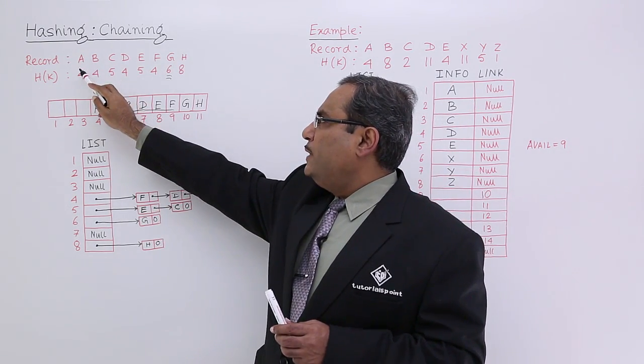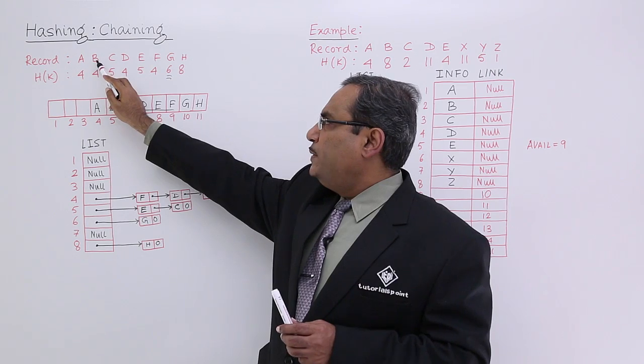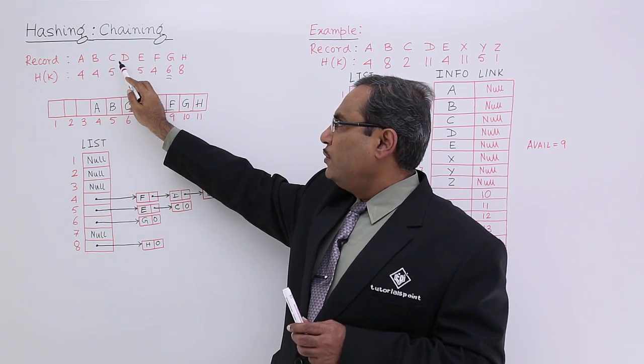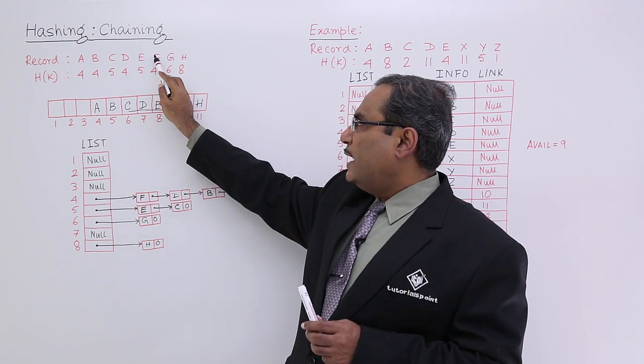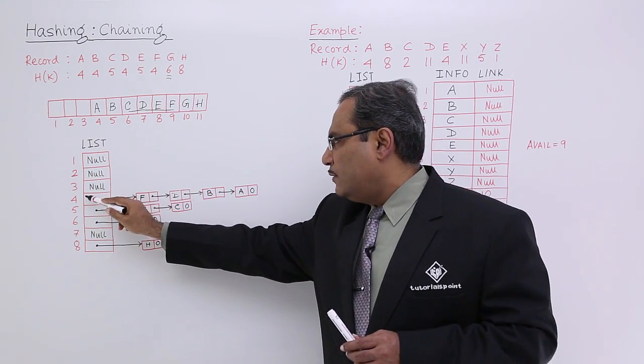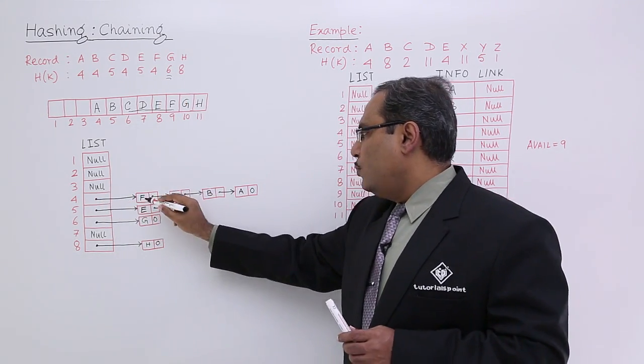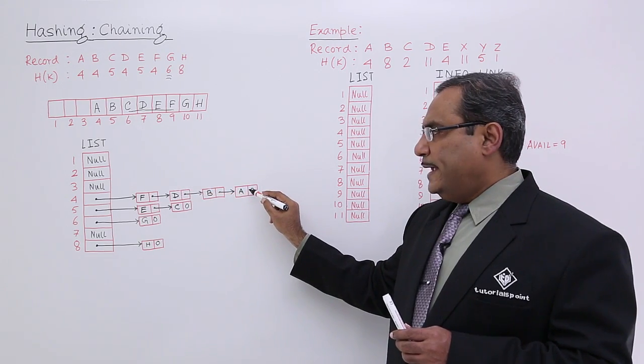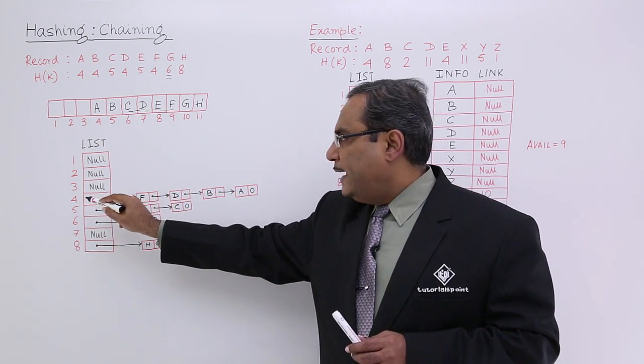A will be at the fourth location, B H of K will be 4, D H of K is equal to 4, and F H of K is equal to 4. You see, we have kept for this 4, we have kept all these records in a linked list format against 4.